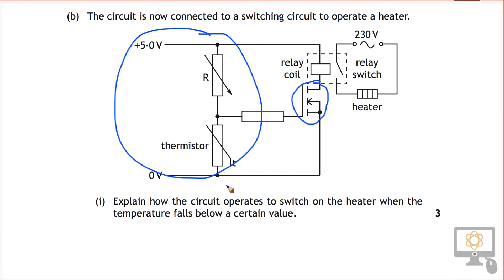So let me just clear the circles that I've done. The first statement that we want to state is relating to the question itself. It says when the temperature falls. So we need to have something about when the temperature falls, what happens? So the only thing that is affected by temperature in this circuit is the thermistor itself. And we know the relationship.